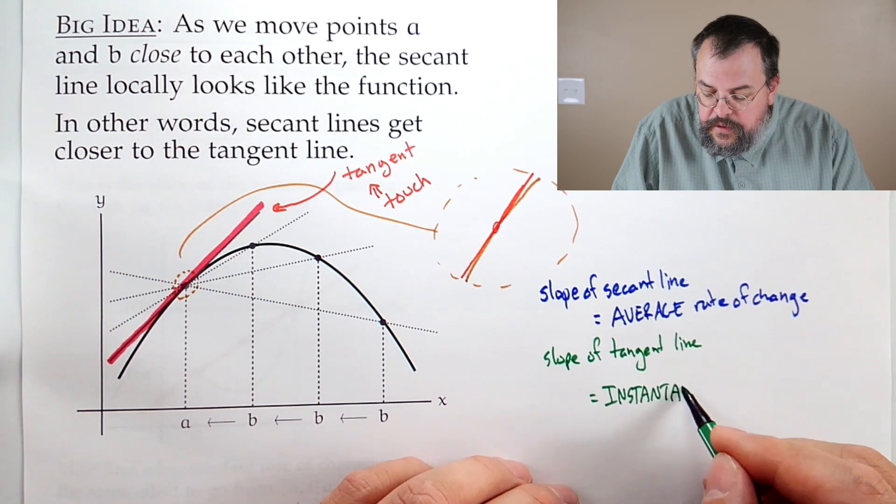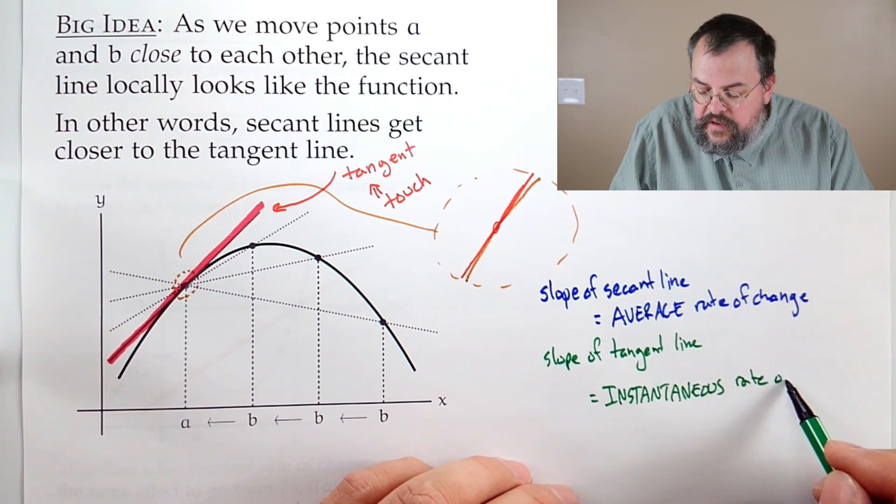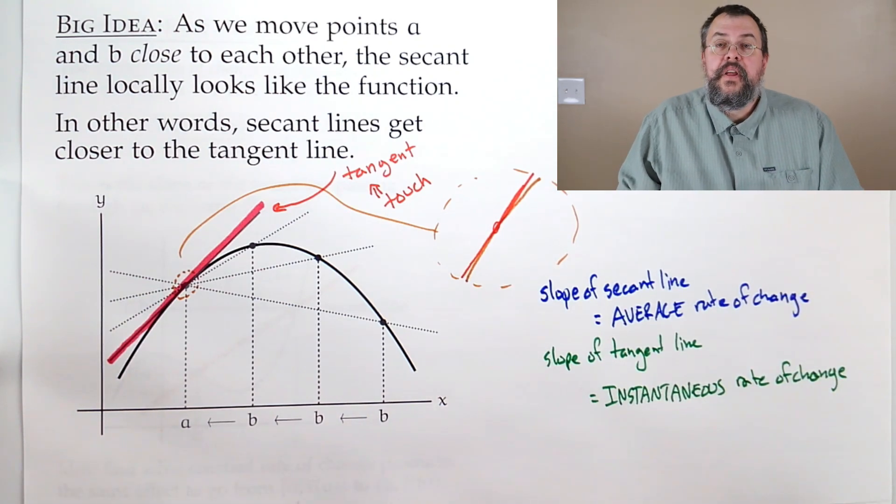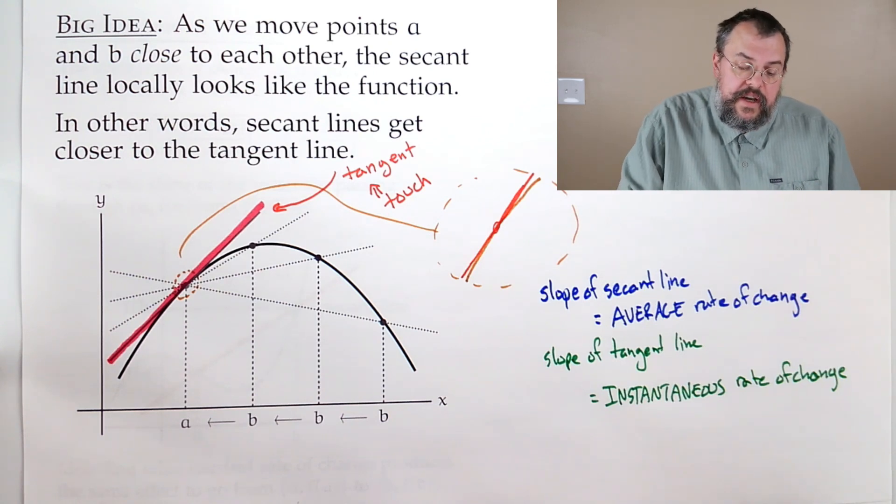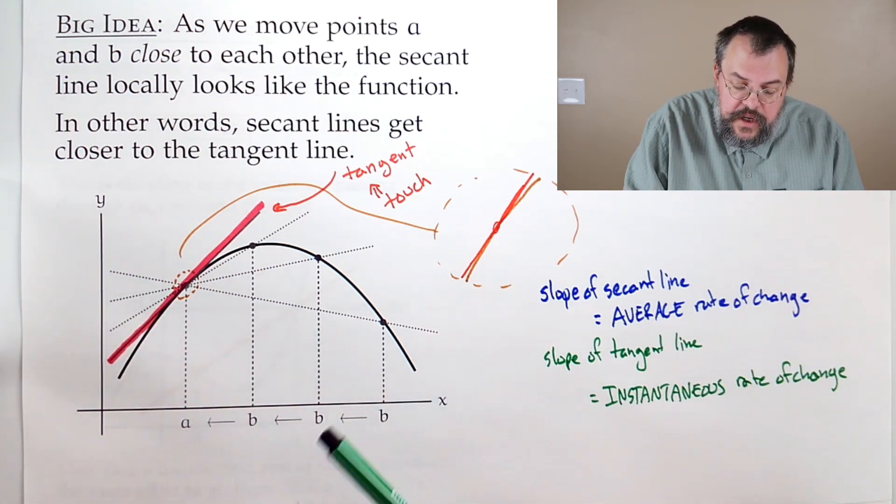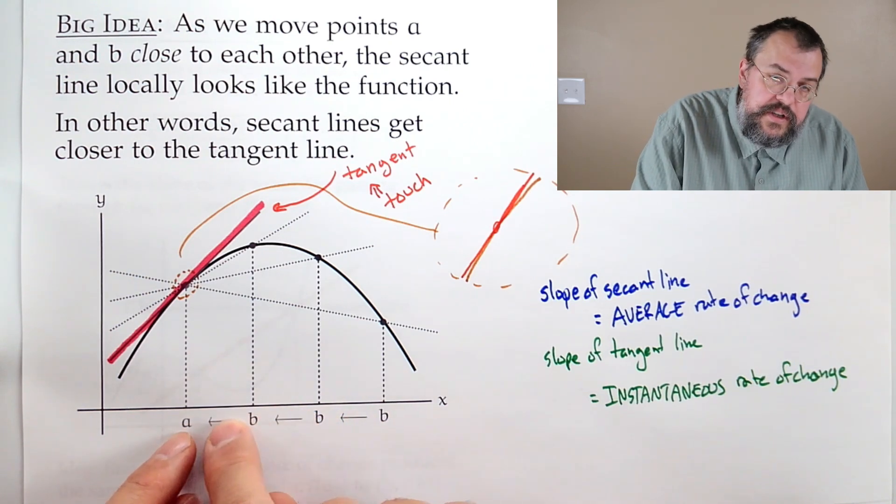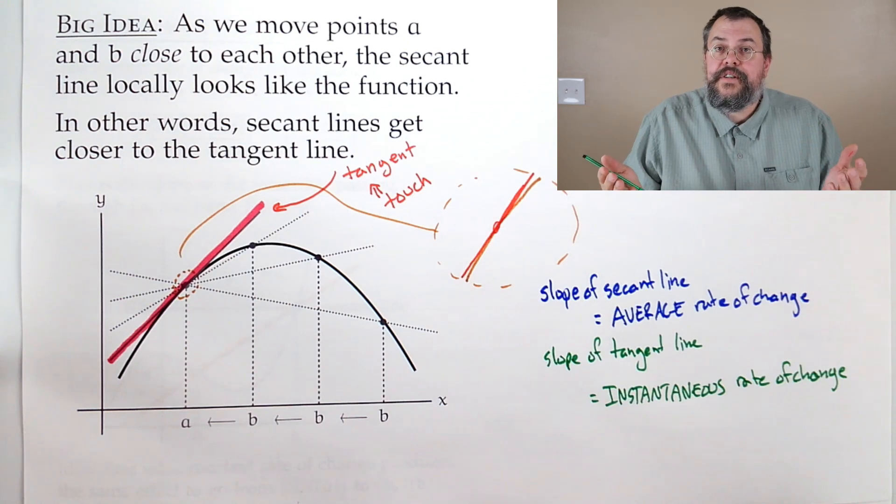So we call this the instantaneous rate of change. And because, of course, instantaneous is a very hard word to spell. But anyways, the instantaneous rate of change. What's happening at that point? So if I want to find the instantaneous rate of change, one way I can do it is I can think of the average rate of change from A to B, and then I can just let B drift in towards A, and I can see what happens. And that helps me understand the behavior.